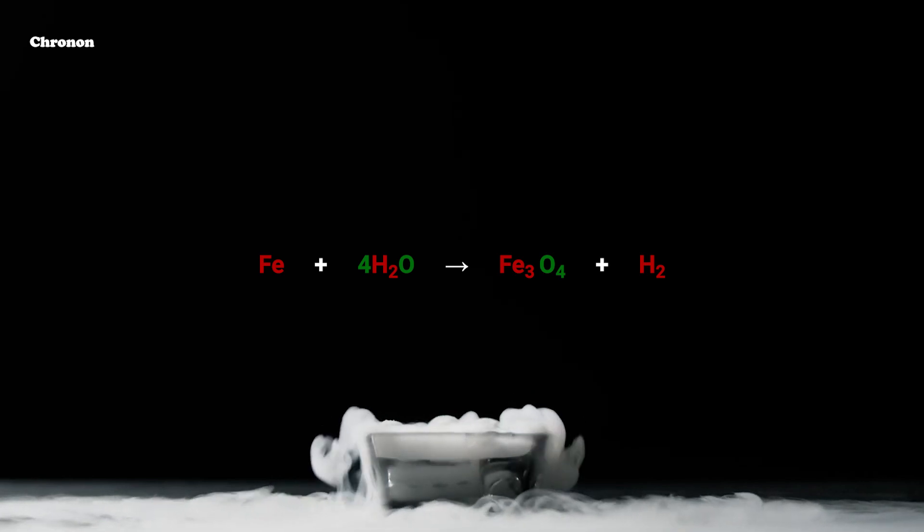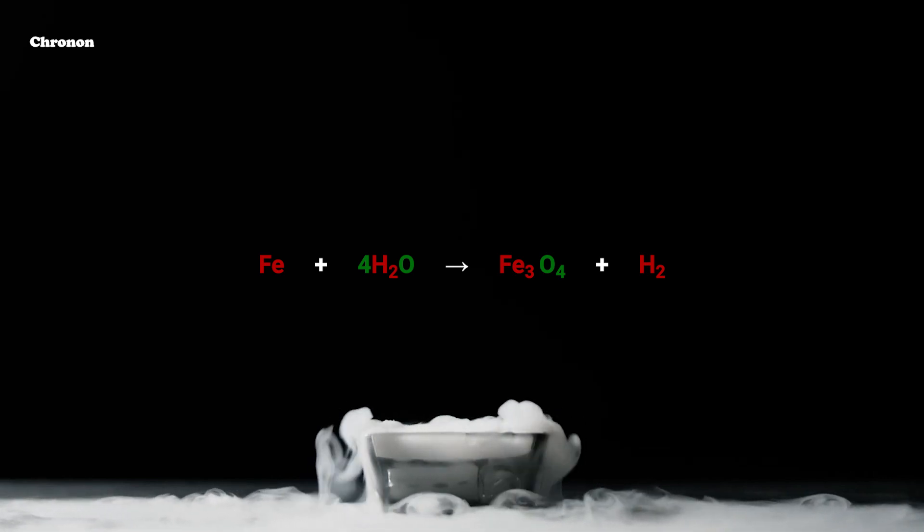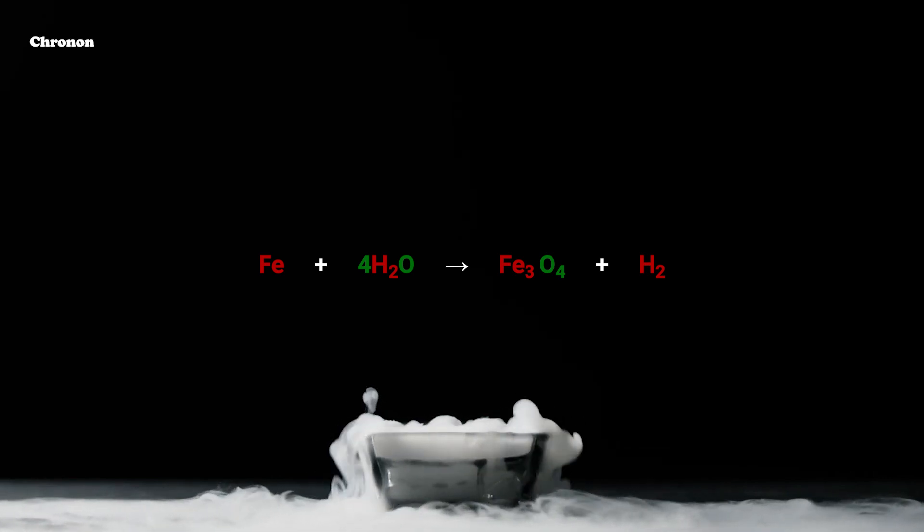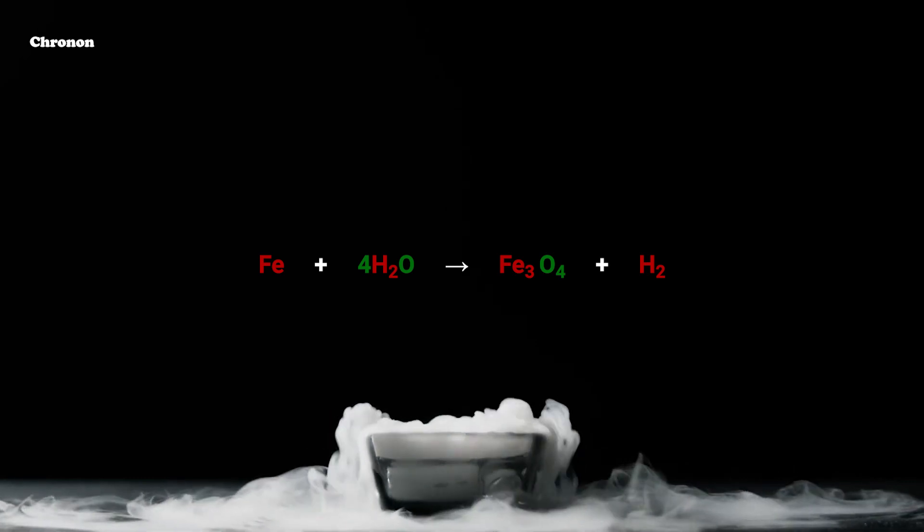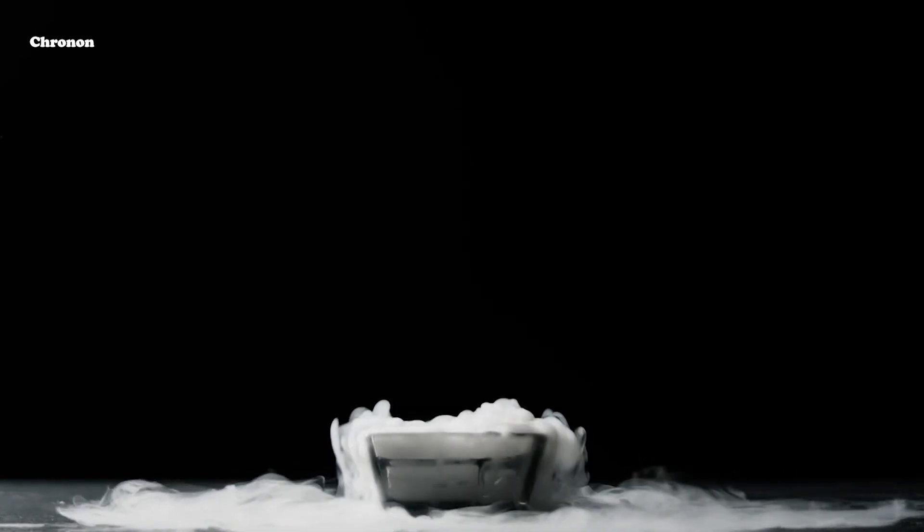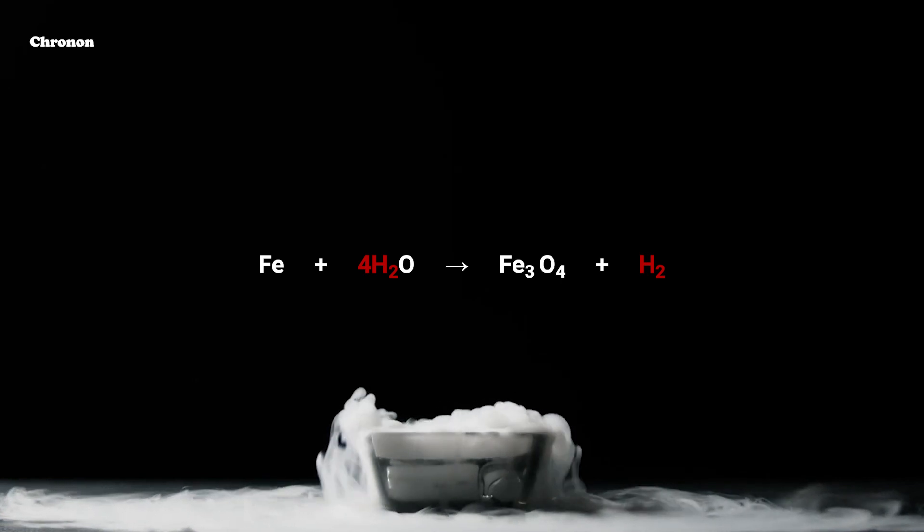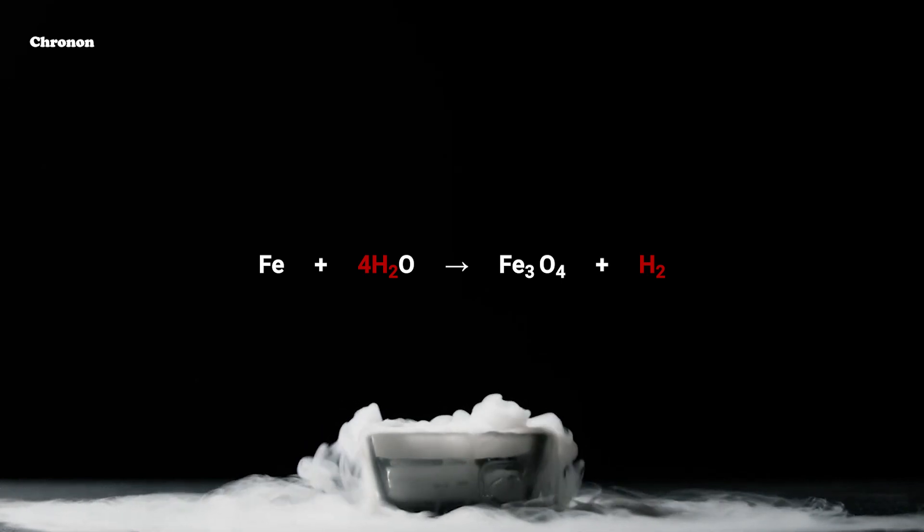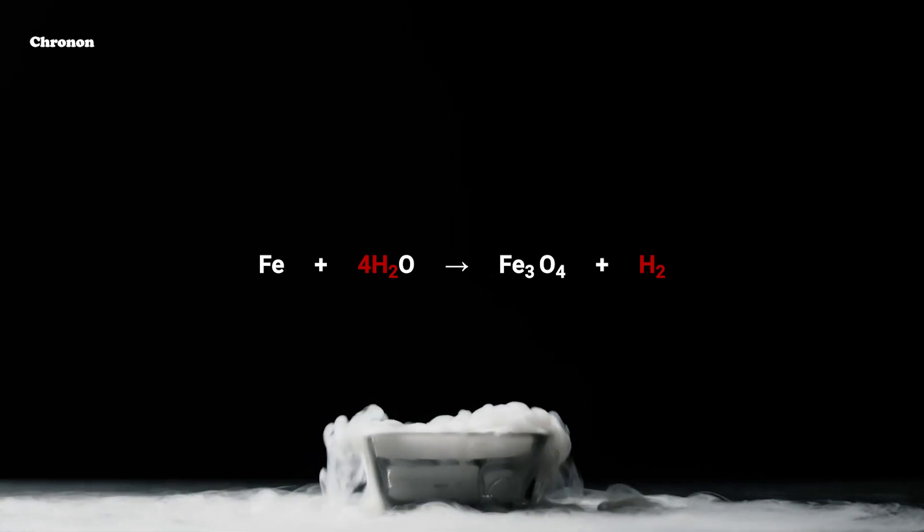Step 4: As oxygen is balanced, iron and hydrogen atoms are still unbalanced. We can pick any of these elements to proceed further. Let's balance hydrogen atoms in the partially balanced equation. In this equation, there are 8 hydrogen atoms on left hand side and 2 hydrogen atoms on right hand side.